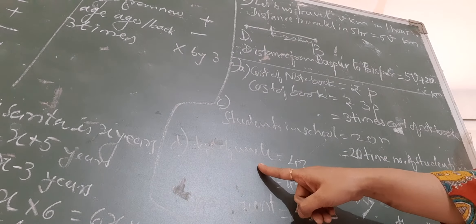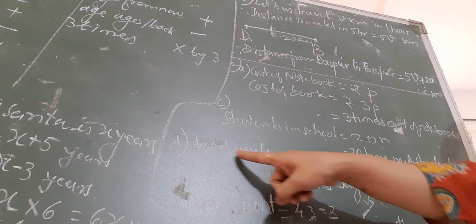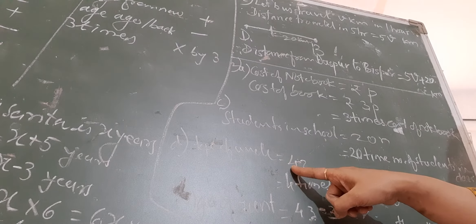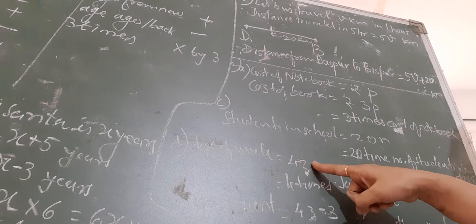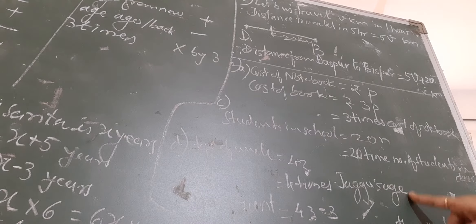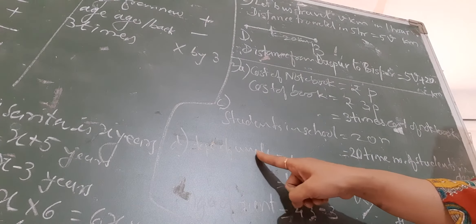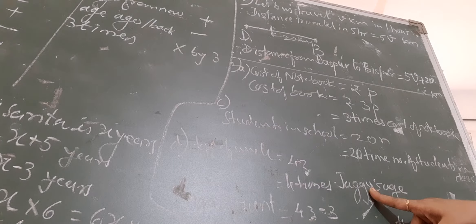Now, in the next one, it is given that Jaggu's age is Z and what is the age of his uncle? Age of his uncle is given 4Z. 4Z means 4 times Z. And what is Z? Z is Jaggu's age. So we can say that the age of uncle is equal to 4 times the age of Jaggu.